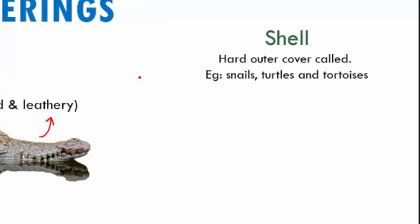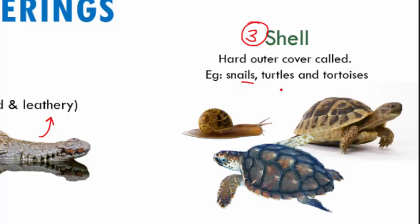The third one is shell. Shell is a hard outer covering. It protects the animal within itself. So examples for this will be snails, turtles, and tortoises. If you see, this is snail, this is turtle, and this is tortoise. Now how do you differentiate between turtle and tortoise? Turtles live in water, whereas tortoises live on land. So that is a difference between turtles and tortoises.